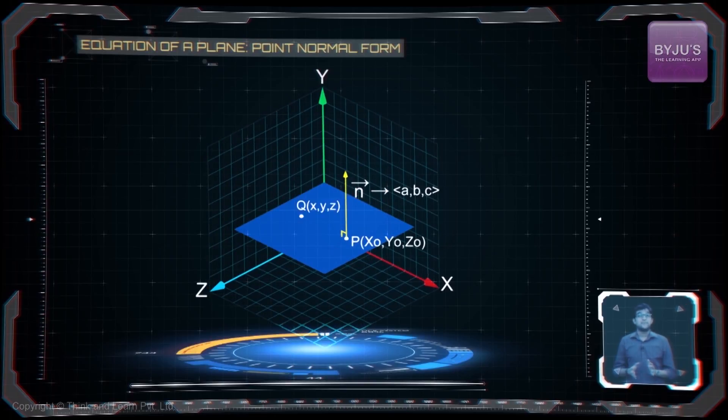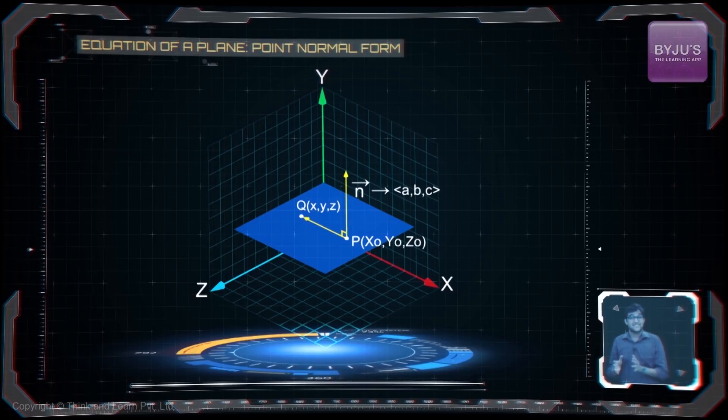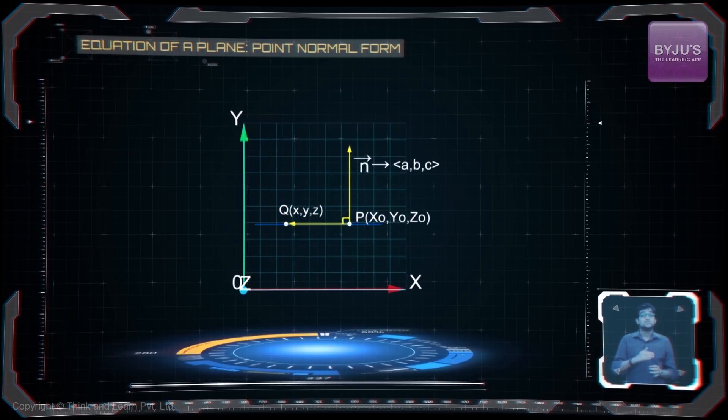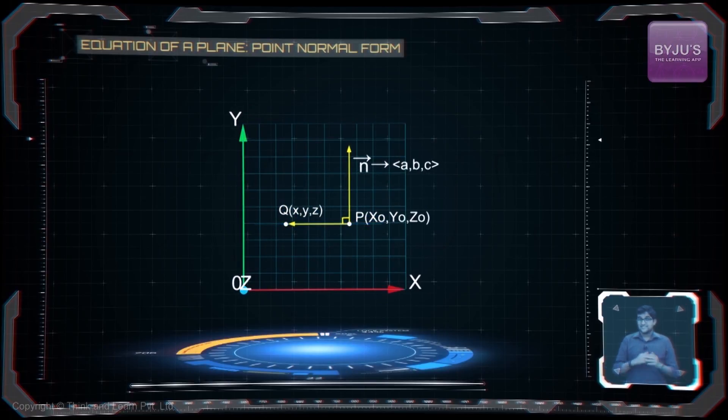Let Q, that's x, y, z, be any arbitrary point on the plane. So you can see that PQ is a vector on the plane, and this vector is perpendicular to the normal vector.